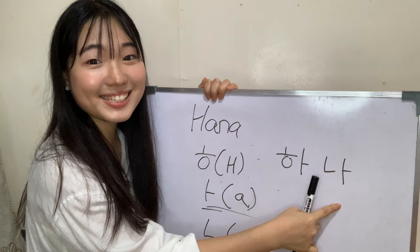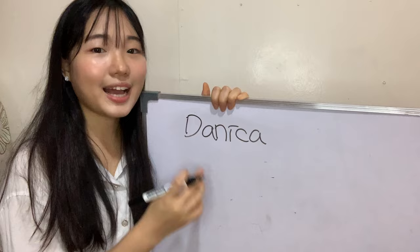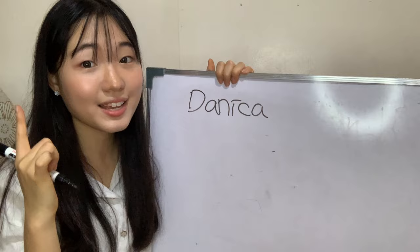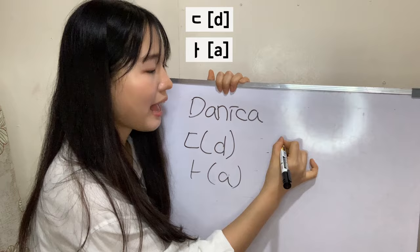Is it easy, right? So now let's learn how to write your name. For example, your name is Danika. Let's write Danika. When we listen, 'Da' sounds like D, so we're going to use D. And there's also an A sound, so we combine D and A to get 'Da.'